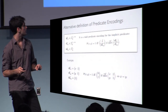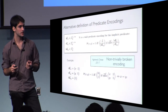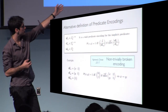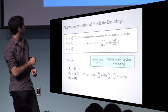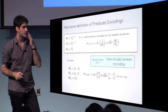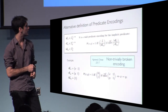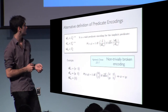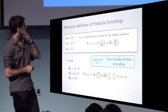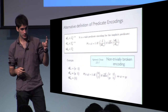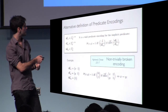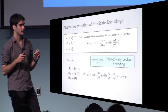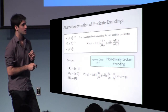In a work by Agraval and Chase from Eurocrypt this year, they consider a notion of encoding in the pair encodings setting with similar ideas to what we obtain from this implicit predicate. They build a compiler that takes what they call a non-trivially broken encoding and produces a predicate encryption scheme under a Q-type assumption. The similarity arises because they also relate the notions of reconstructability and privacy: a non-trivially broken encoding does not satisfy reconstructability, and they argue that is enough to have privacy.